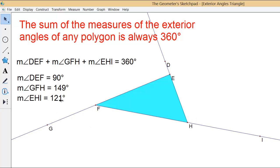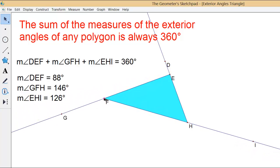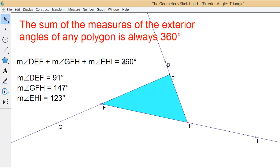The measures are found and then the sum of the measures is calculated. When I move the vertices, notice that the angle measures change, but the sum of the measures is always 360.